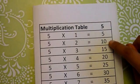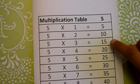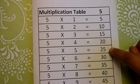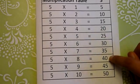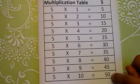5 1's are 5, 5 2's are 10, 5 3's are 15, 5 4's are 20, 5 5's are 25, 5 6's are 30, 5 7's are 35, 5 8's are 40, 5 9's are 45, 5 10's are 50.